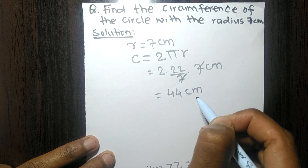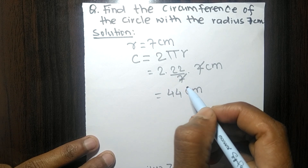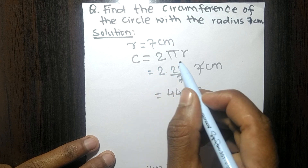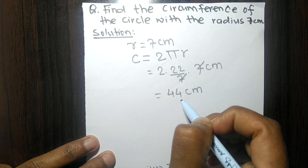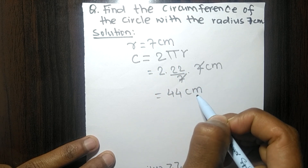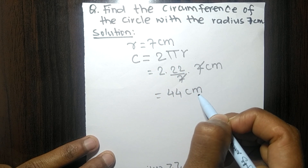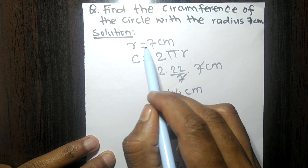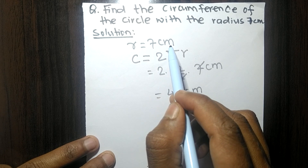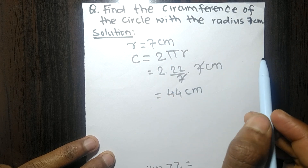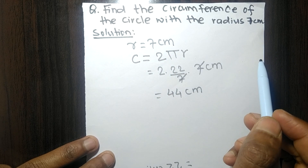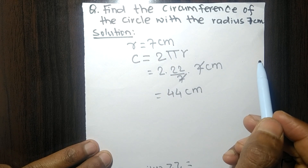So the circumference of the circle is 44 centimeters when the radius is 7 centimeters.